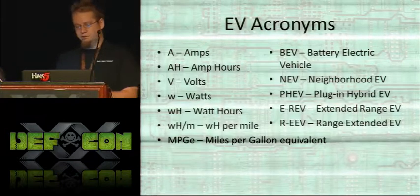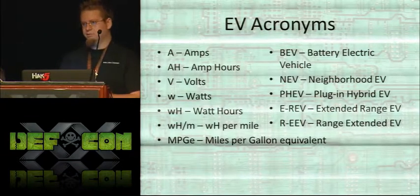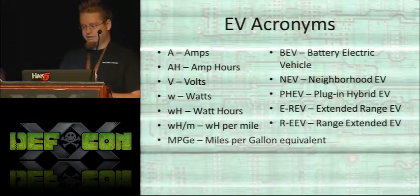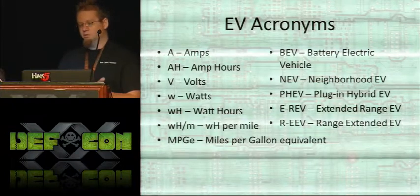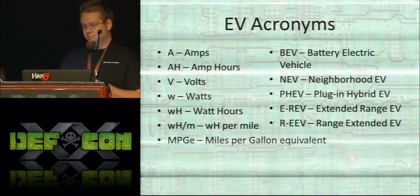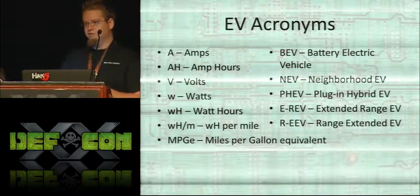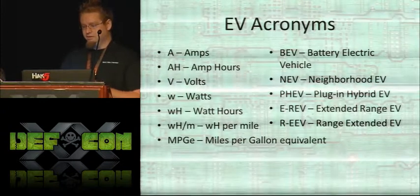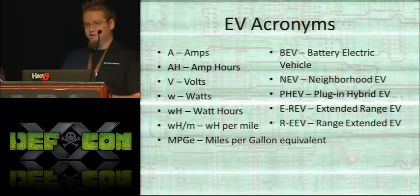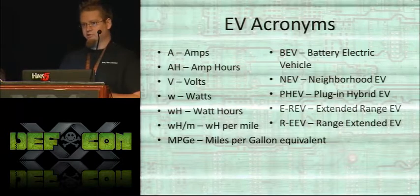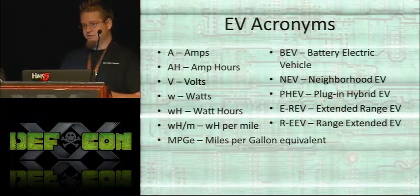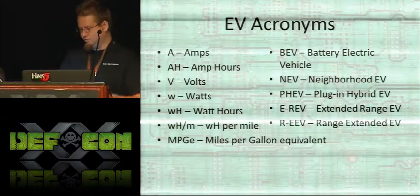Some acronyms you need to know: amps, volts, amp hours is how you measure battery capacity, watt hours is how much power you're getting out of that battery, watt hour per mile is how much power you need to go somewhere, and miles per gallon equivalent lets you compare to a gas car. A BEV — battery electric vehicle — we usually just call it an EV. NEV is a neighborhood EV, those are short range or low speed vehicles. There are plug-in hybrids that run on gas but can also be plugged in. Extended range EV and range extended EV are just things GM made up because they didn't want to call it a hybrid.